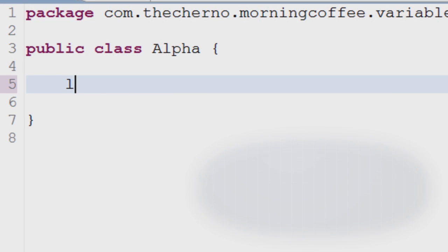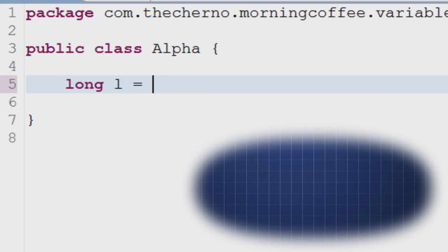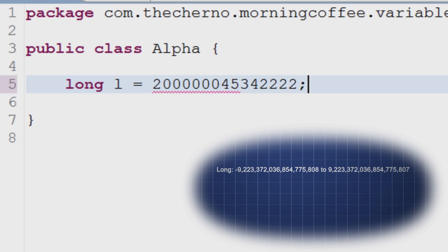Now we're getting into variables that are, to put simply, huge. The long variable contains an integer that has the minimum value of negative 9.2 quintillion and a maximum value of 9.2 quintillion. In order to use the declared integer as a long, an L is appended to the end of the declaration.